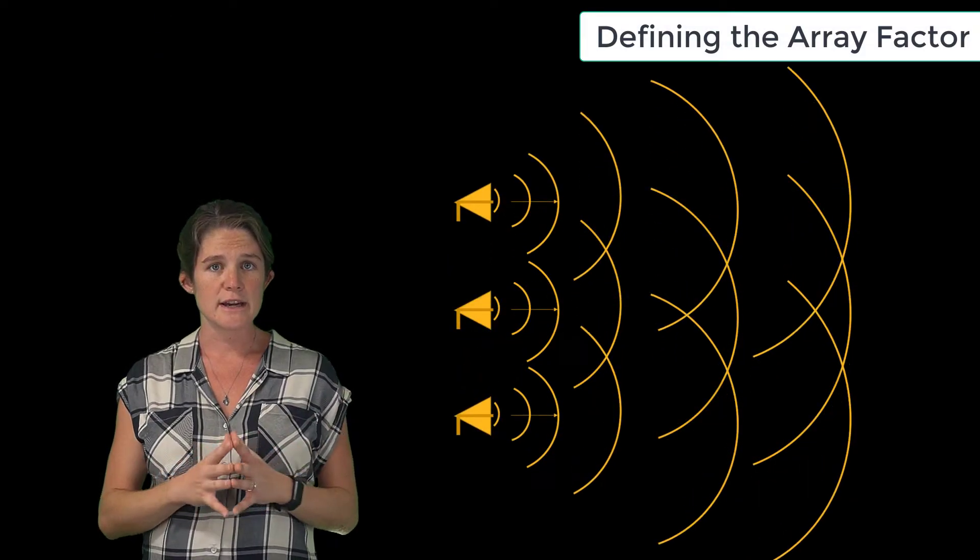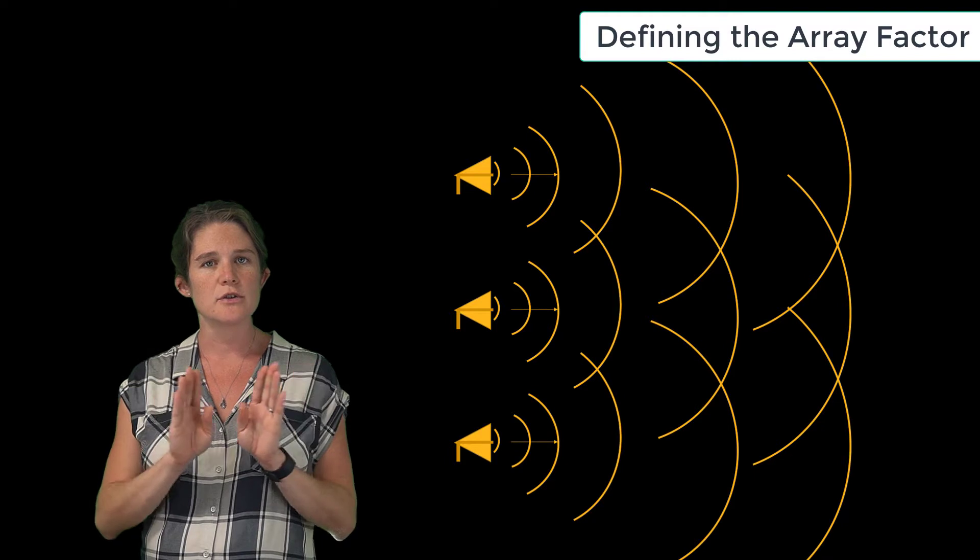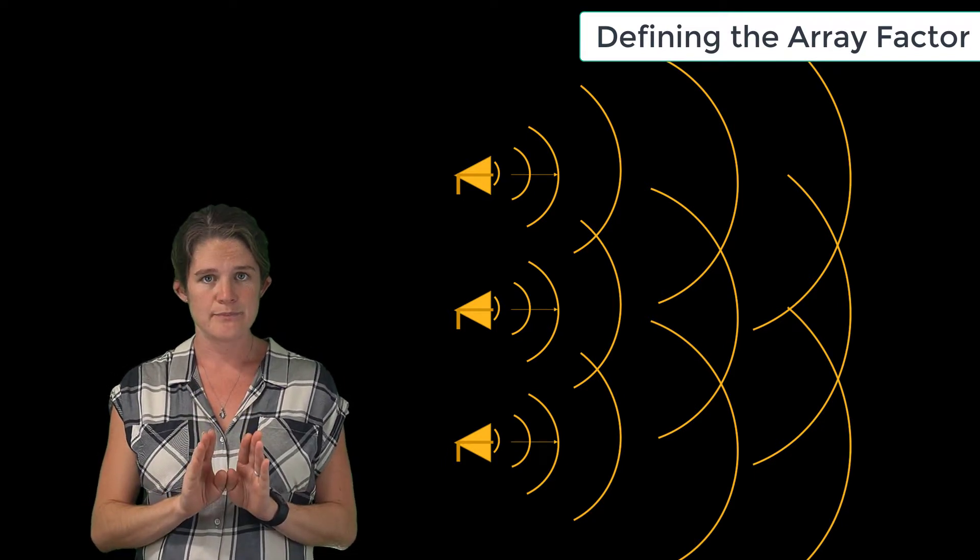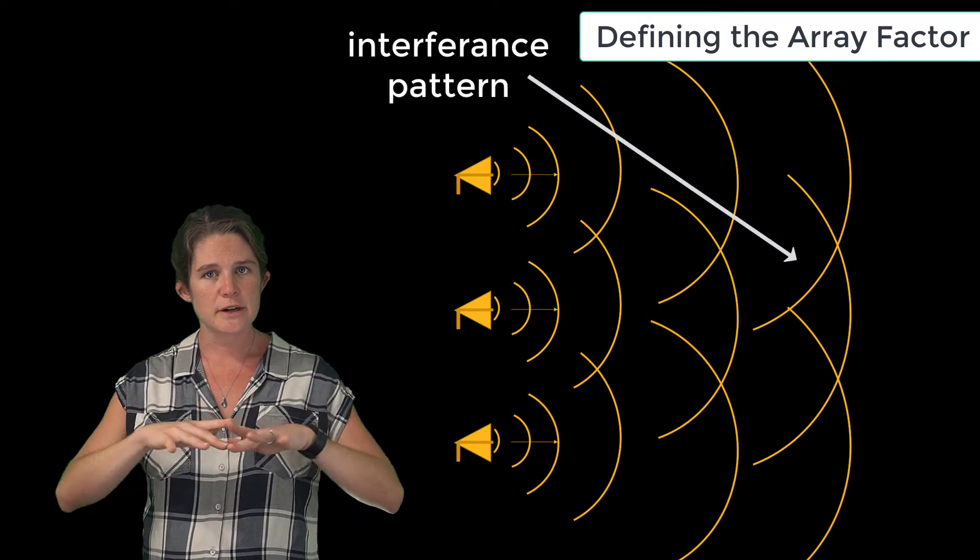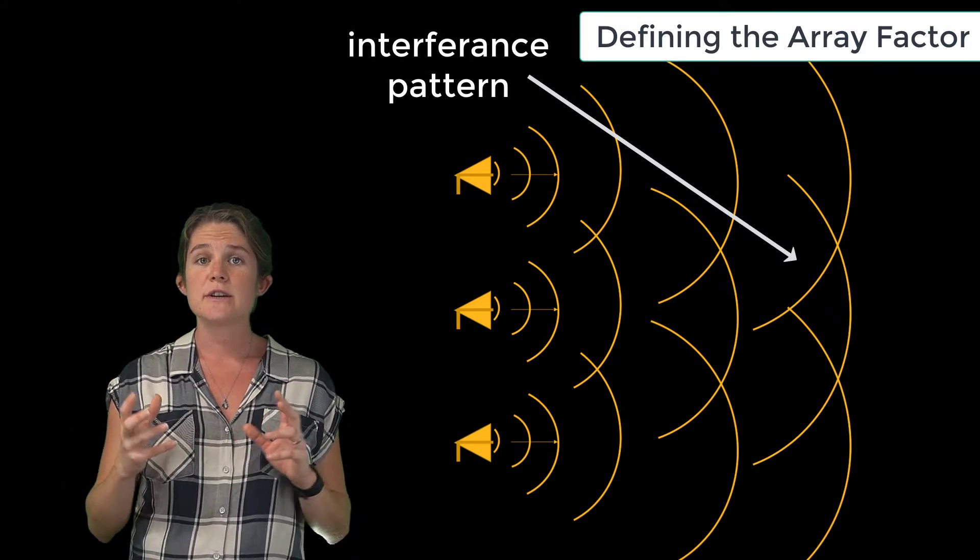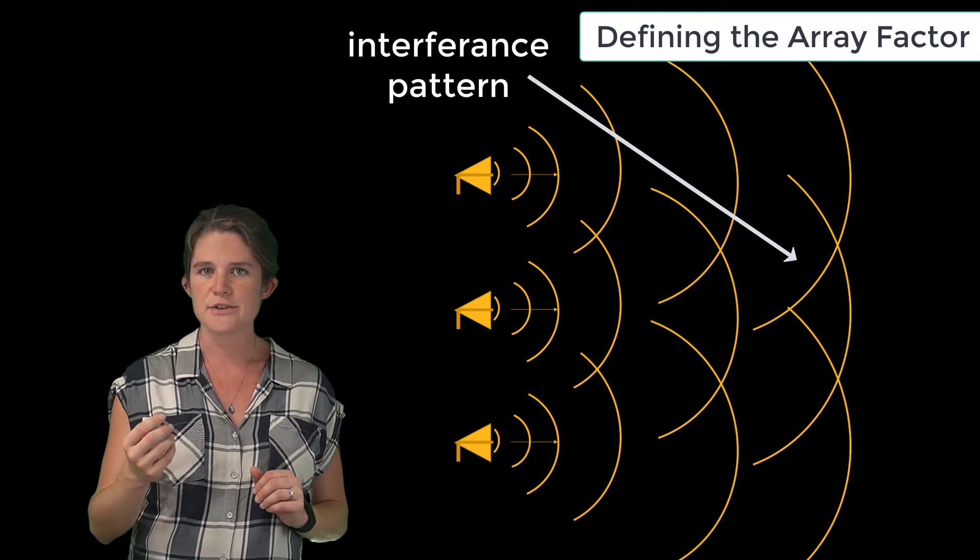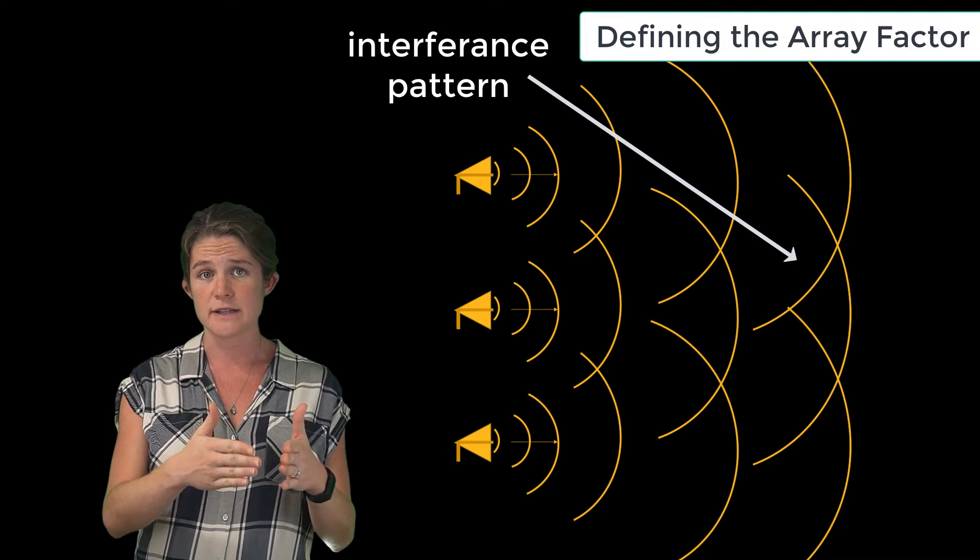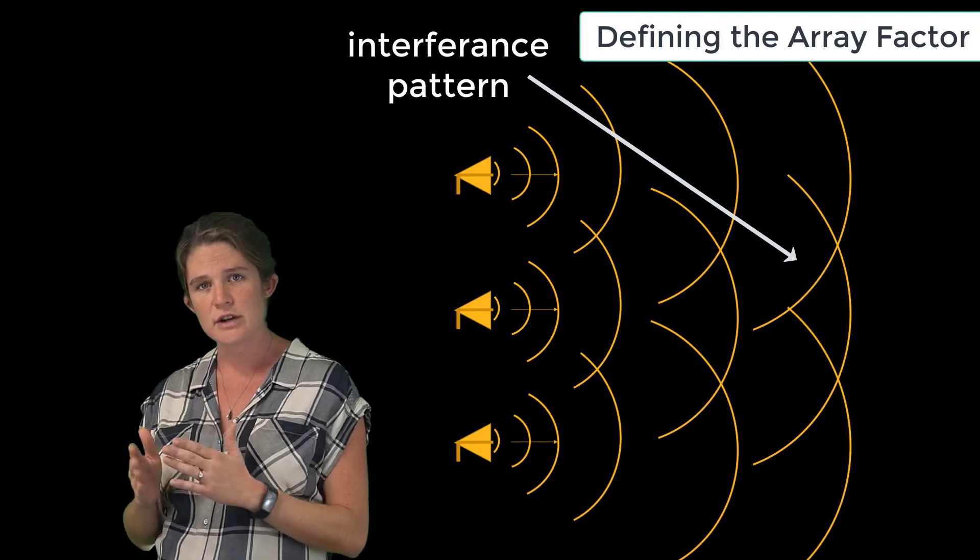An antenna array is a collection of antennas which are operated in close proximity to one another and designed to work in tandem. It leverages the interference pattern of the fields radiating from the various elements to achieve a desired radiation pattern. It's designed so that the radiated waves encounter constructive interference in directions of desired radiation and destructive interference in other directions.